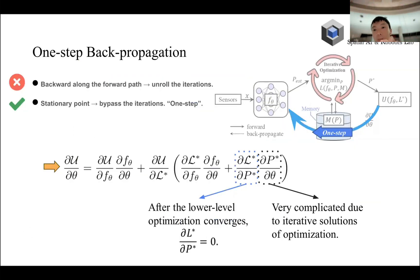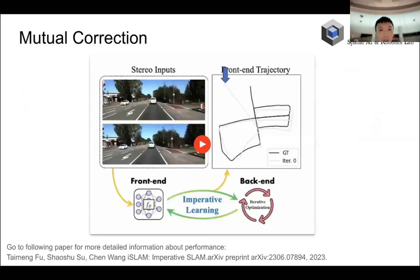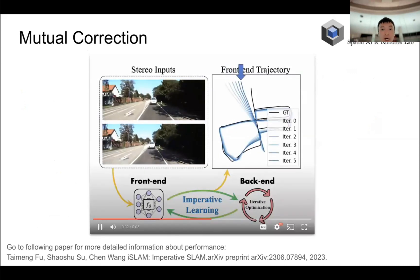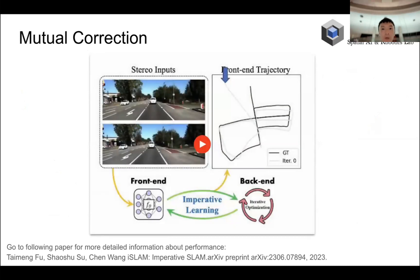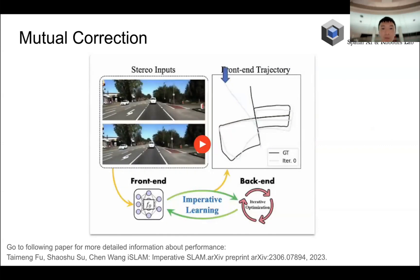So until now we have introduced the basic structure: we have a deep learning-based front end and a traditional geometry-based back end. Actually, they can be any existing networks or any existing back end. Here we just use a simple demo — we design a stereo visual-inertial odometry system. Because of mutual correction, we can perform multiple rounds of forward and backward passes, so the performance of the front-end estimation keeps improving.